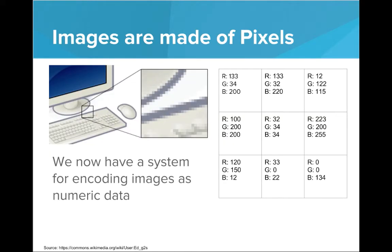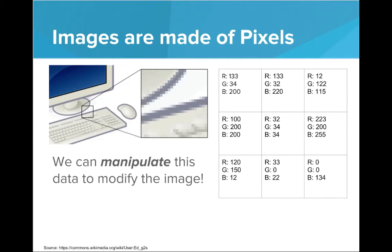So we now have a system for encoding images as numeric data. We have a way to represent any image we want as just a series of simple numbers. And what's awesome is that we can manipulate those numbers to modify the image. This is what's so great about representing information in a digital form. It becomes very easy to use programs to tweak those numbers to modify the data, and we get a brand new image, a brand new result.